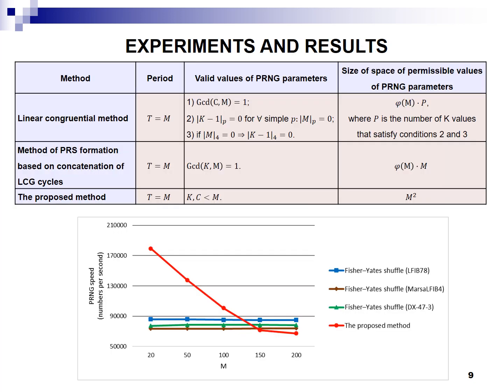The proposed approaches to the construction of the device for pseudorandom sequences generating on the linear congruential generator basis are used to create a software implementation of generators. The proposed method allows increasing the size of the space of allowable values of linear congruential generator parameters to achieve the maximum pseudorandom sequence period. The speed of the developed generator exceeds the speed of the permutation generator using the Fisher-Yates algorithm for parameter m less than or equal to 125.